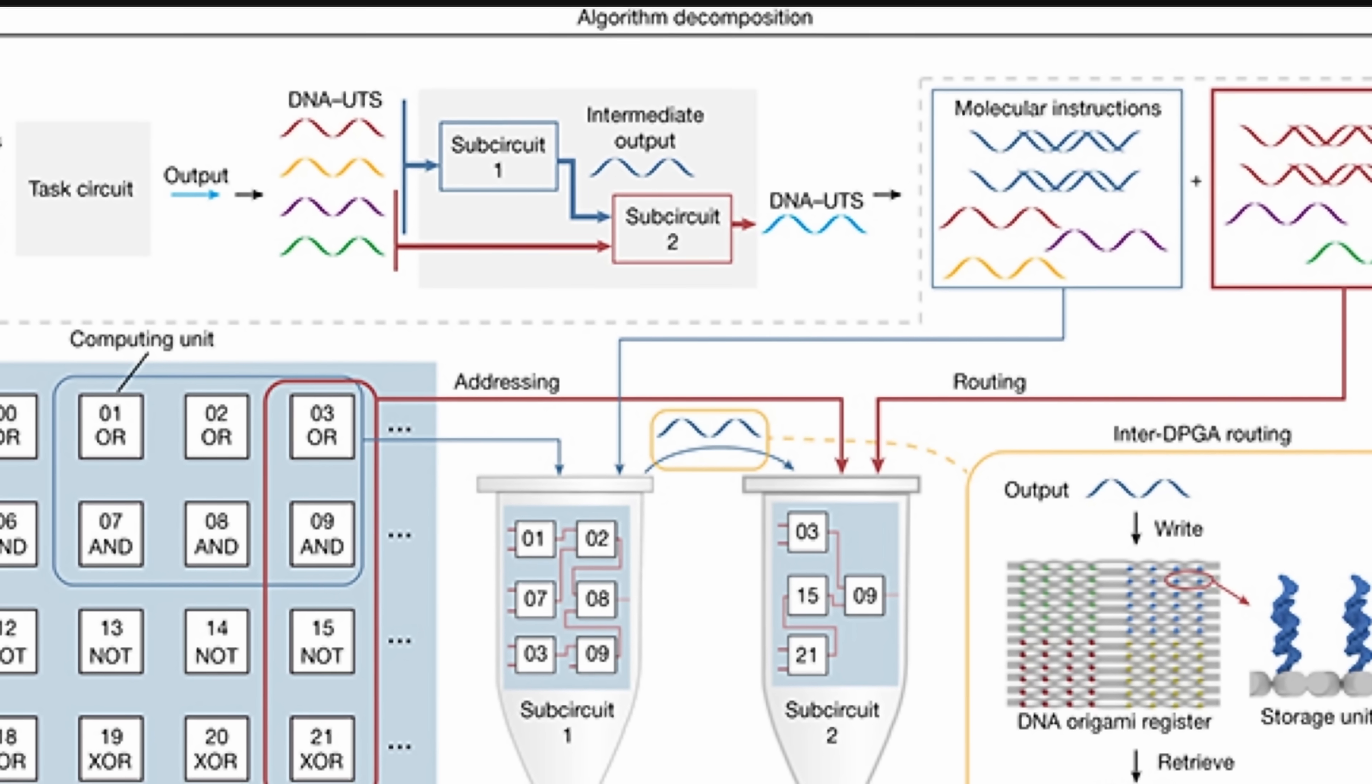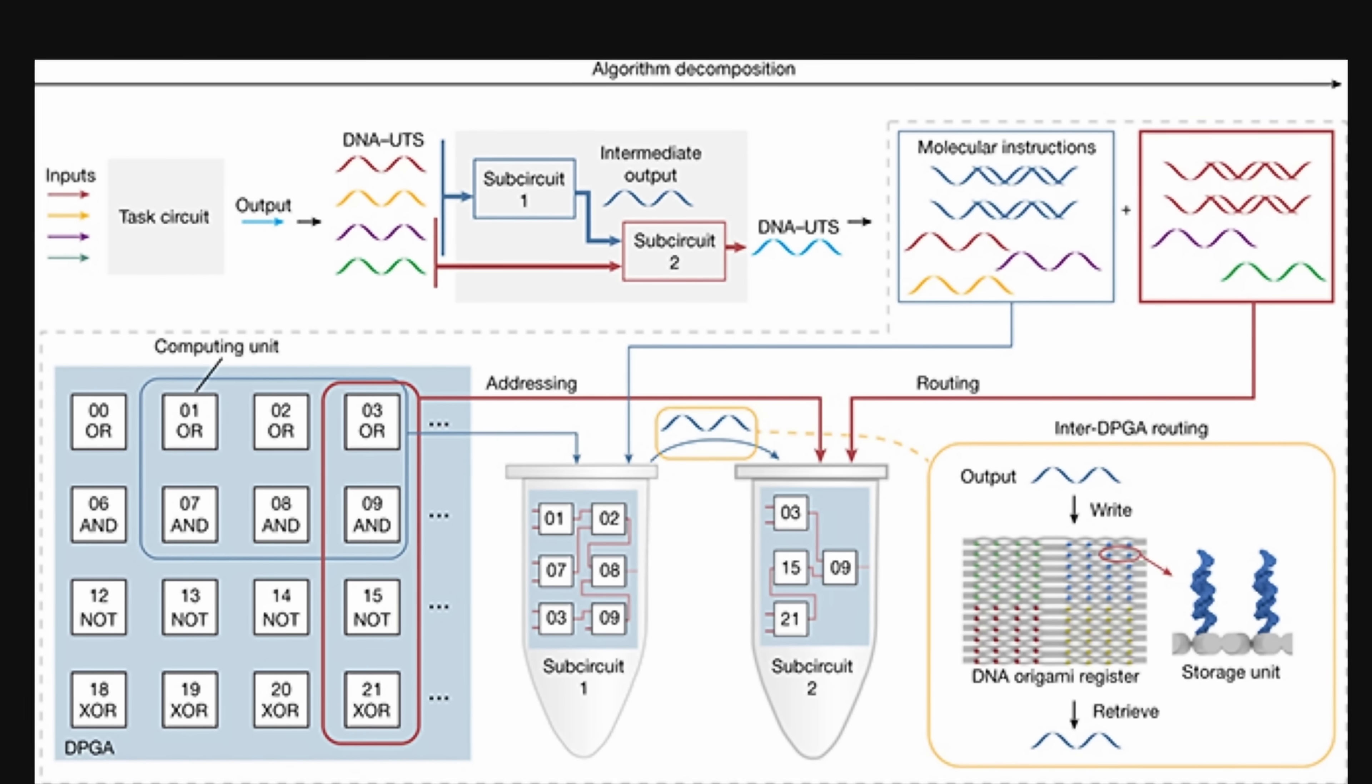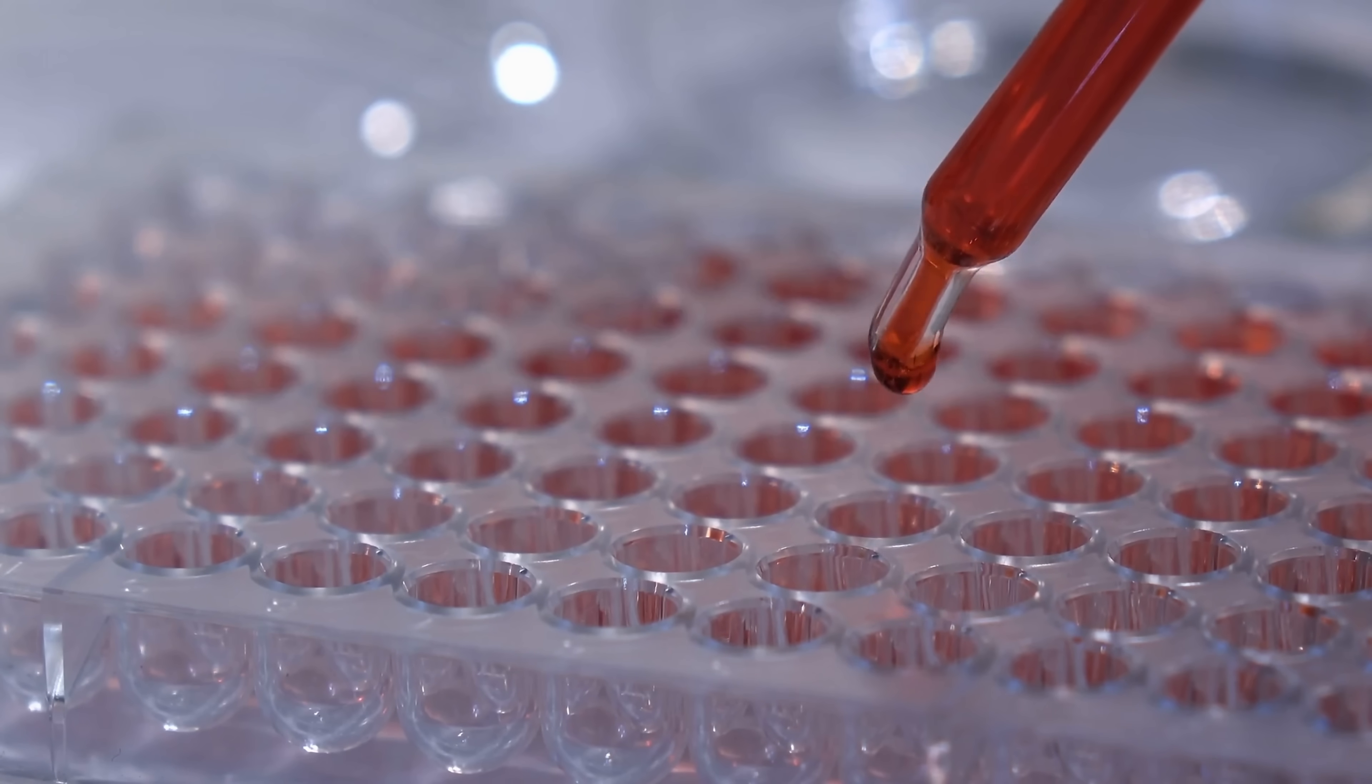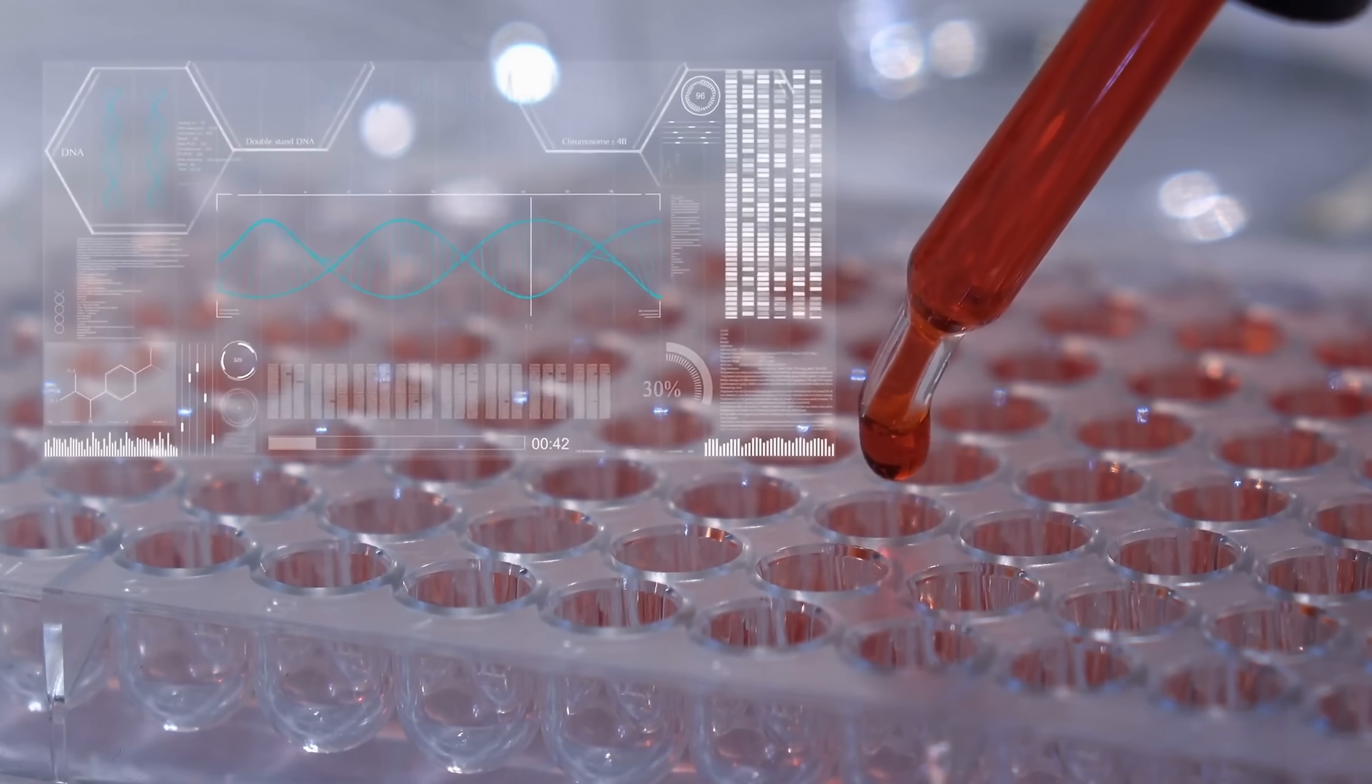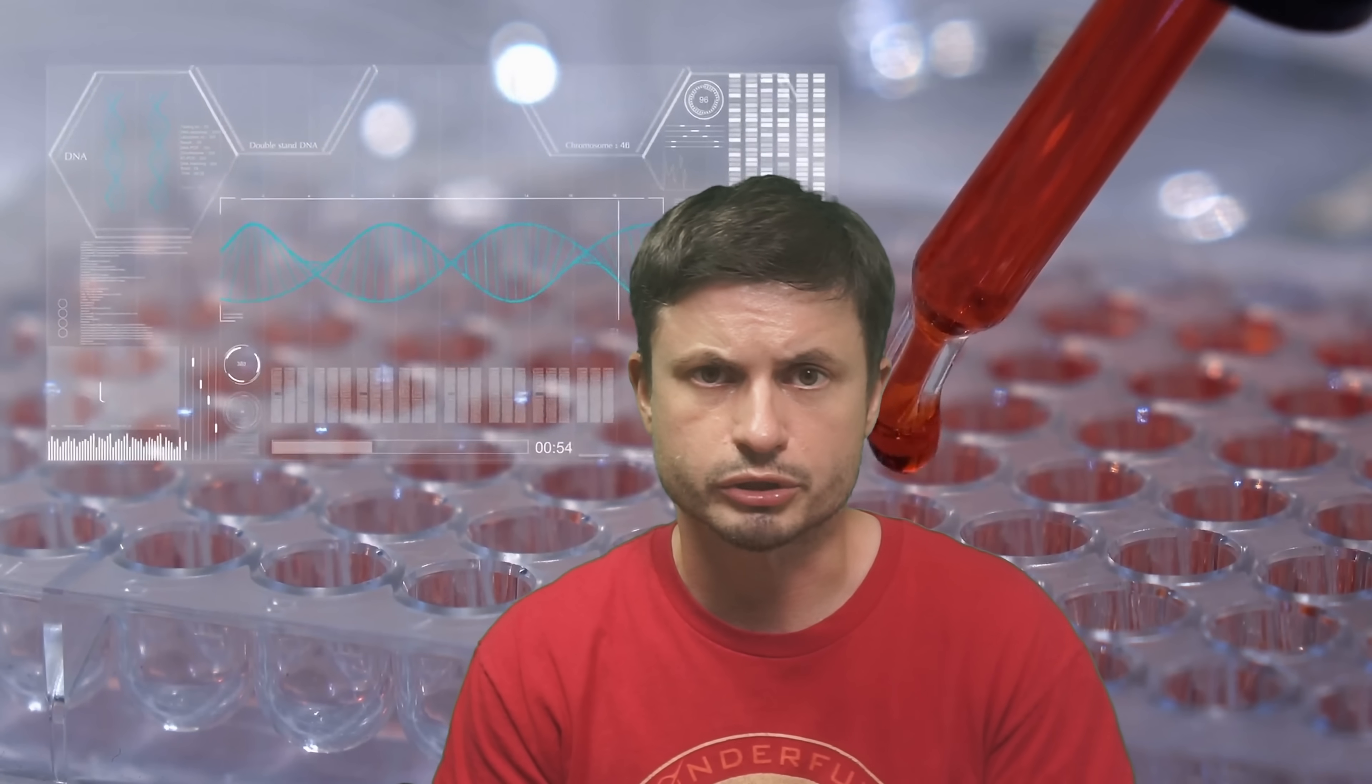But this is just the first step. Here they only used 30 different logic gates and only 500 DNA strands. But even this really tiny system was able to solve quadratic equations providing the correct answer. And so there's quite a lot of potential here.